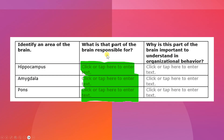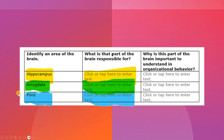Here is your second column — this is where you're going to be entering three to four sentences discussing what each of these areas is responsible for. So I would write three to four sentences about what the hippocampus is responsible for, three to four sentences about the amygdala, and three to four sentences about the pons. This should be about the part of the brain that's in the same row — if hippocampus is in the first row, that column two entry should be about the hippocampus and so on.